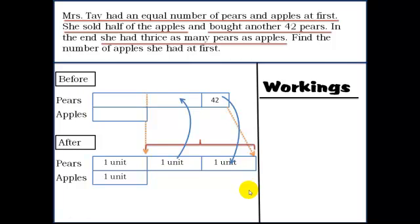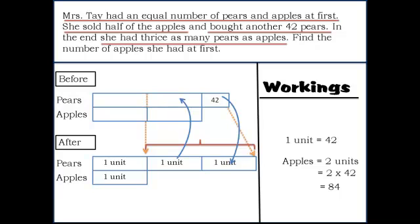As far as the workings are concerned, it's similar to what we saw earlier. From the diagram, we clearly know that one unit is equal to 42. Apples, which is equal to 2 units, would be 2 times 42, which is 84.